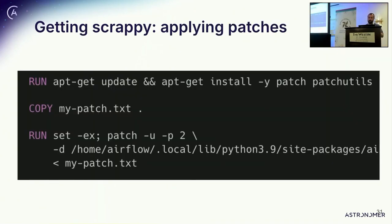In terms of how to apply patches: I've done things like taking a file from our GitHub, modifying it, and copying that into Docker. A better way is to make a change locally in the Airflow open source repo, create a diff of it and dump it to a file, and then apply it in your Docker image. These are sometimes extreme measures when you're trying to make something work for production, but it's something to have in your toolkit.